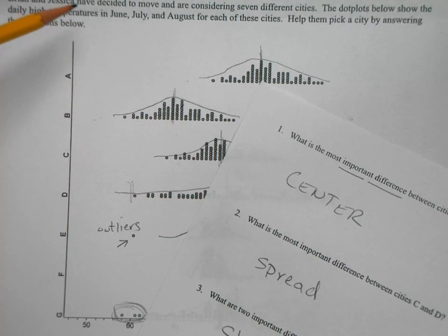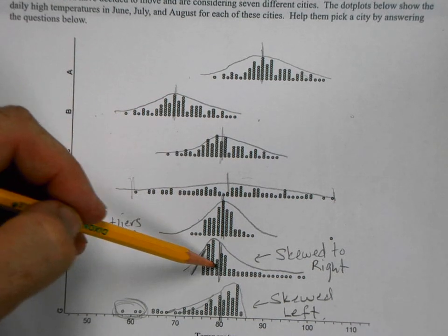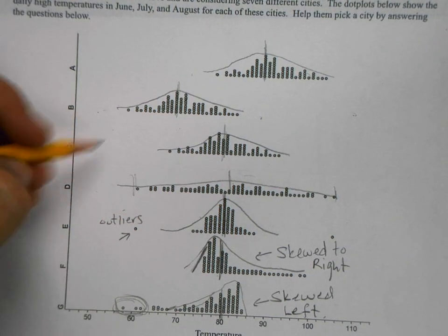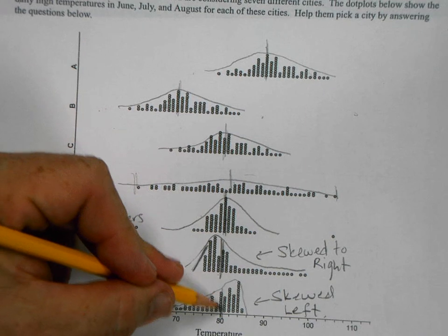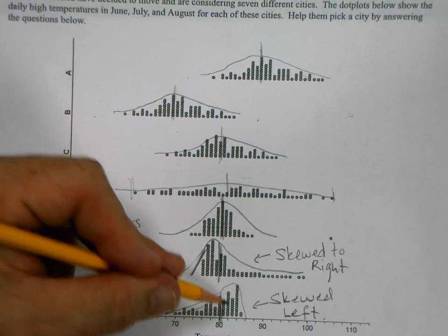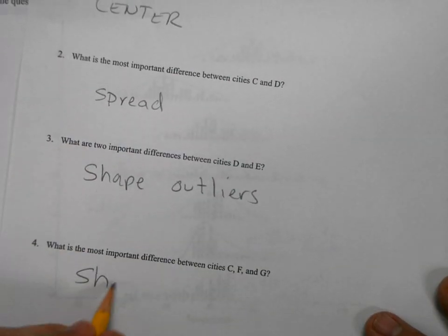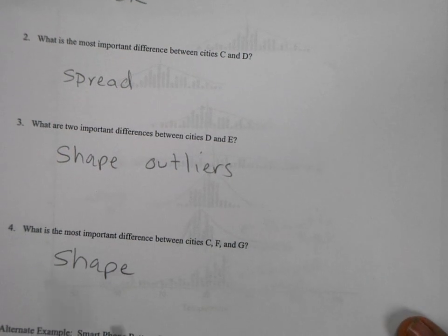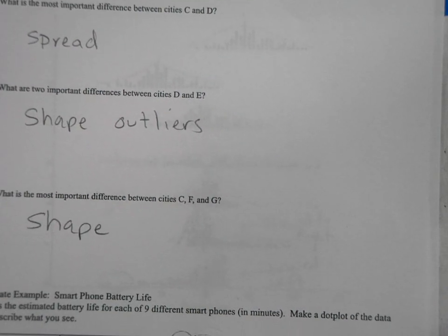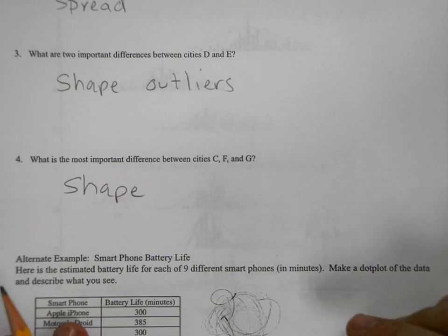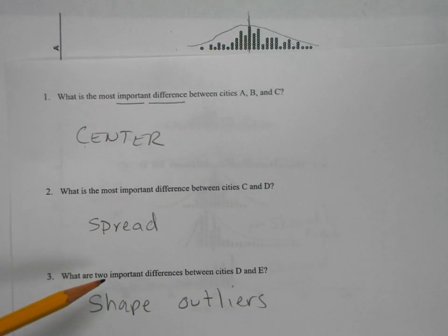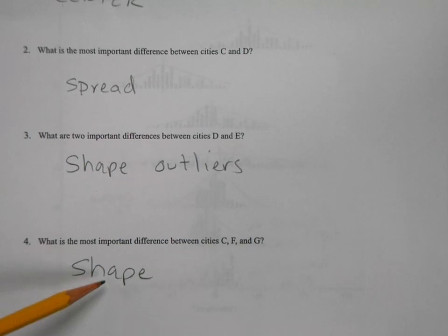What about C, F, and G? C, F, and G, those are all basically the same. Here we go, C, F, and G. Centers are about the same, maybe outliers mostly shape. So we're talking about shape. The other ones are skewed and C is symmetrical. All right, so sorry about the scribbly line. I grabbed the wrong one to see if my pen was working right. So we've got shape. Let me go through those again. We've got center, we've got spread, we've got shape and outliers, and then we have shape again.